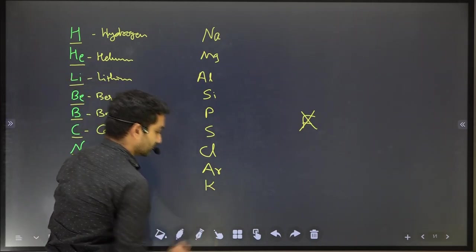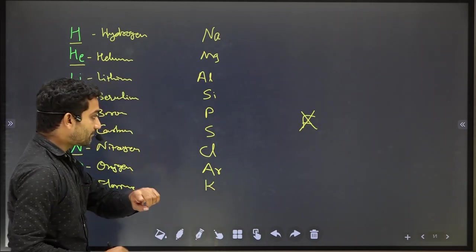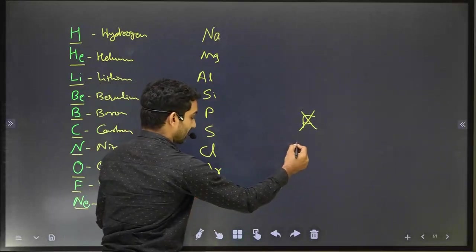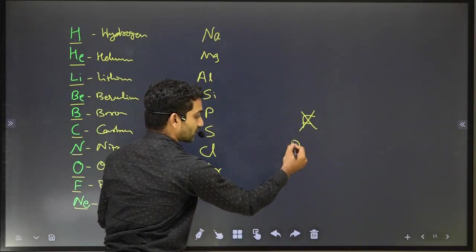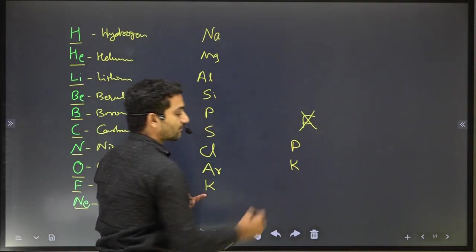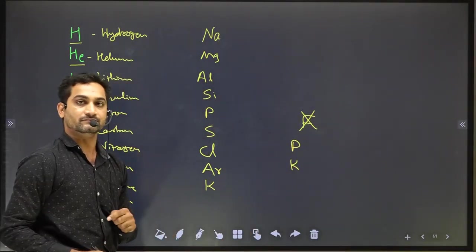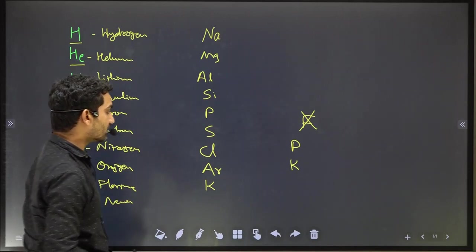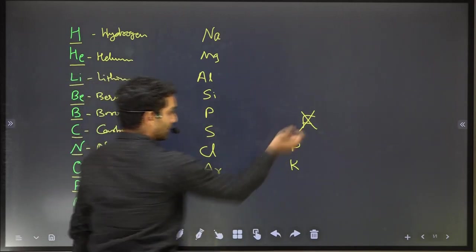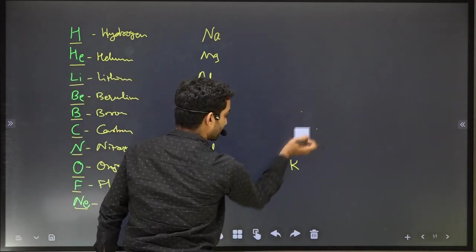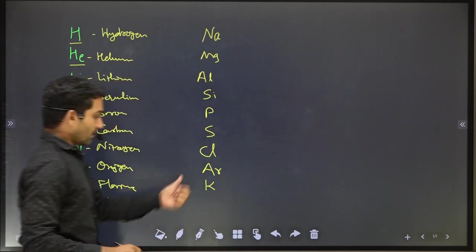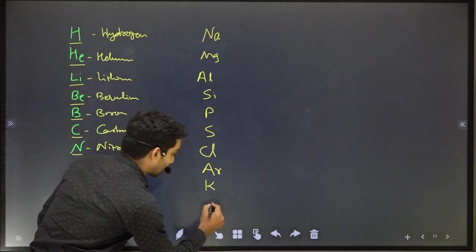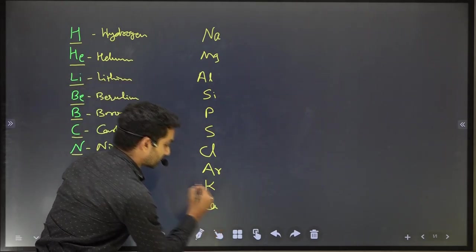Po — Potassium. Please keep in mind: P means Phosphorus, K means Potassium. And K K means Calcium. There should be no difficulty in remembering this. Soh, A, Po, K, K — meaning Sodium through to Calcium.